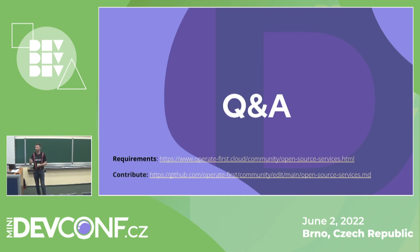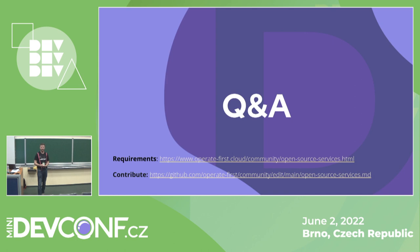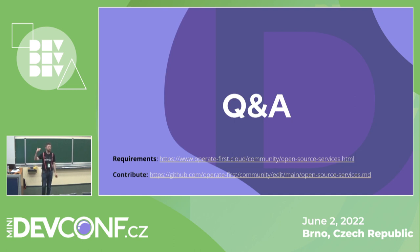Next question: are we required to take contributions that we don't like from a business perspective — for example, a feature migrated from somewhere else where the code is good but it doesn't fit business purposes? The answer is no. The same principle applies as with other open source projects. These minimum requirements serve to enable a contributor you don't agree with to fork your service. It's difficult to make a second copy of the service, but these requirements enable that behavior — just like forking an open source project.